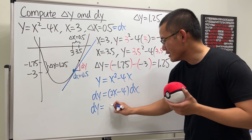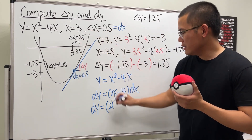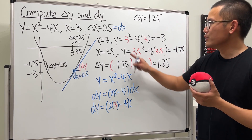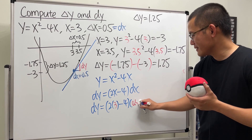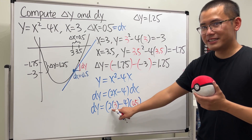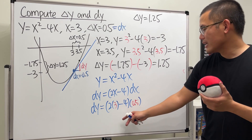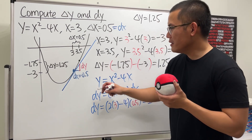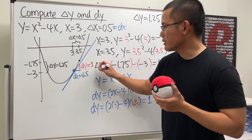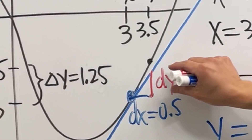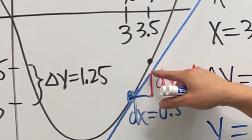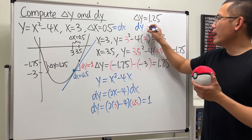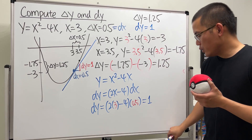Now plugging in: dy = (2(3) - 4)(0.5) = (6 - 4)(0.5) = 2 × 0.5 = 1. So dy = 1. This is slightly smaller than Δy (which was 1.25) because of the gap between the tangent line and the actual curve. In our situation, dy = 1.